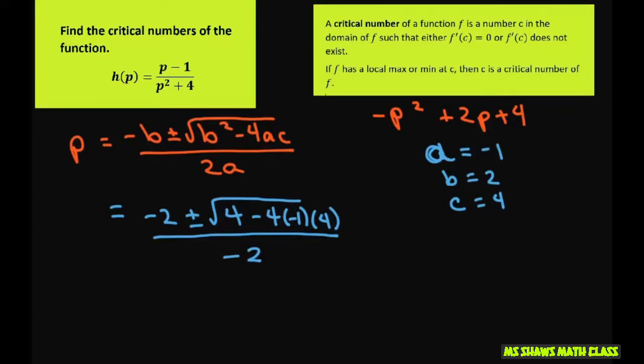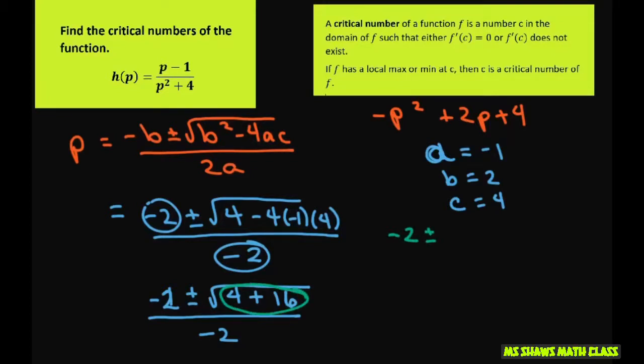So when you divide these, you'll get positive 1. So basically, you're going to get 1 plus or minus square root of 4 plus 16 all over negative 2. This is going to give you negative 2 plus or minus, now this is 20, which can be written as 4 times 5, so it's 2 square root of 5 divided by negative 2.